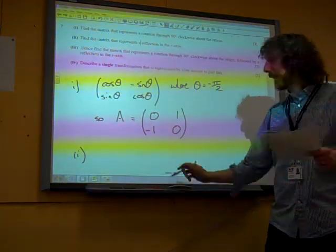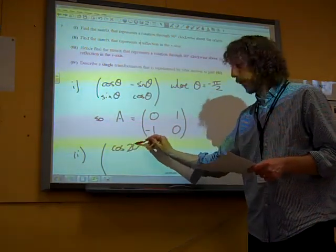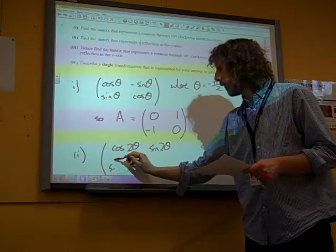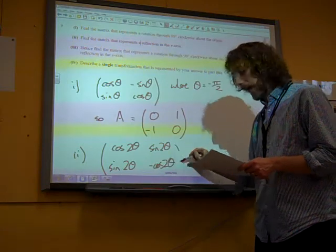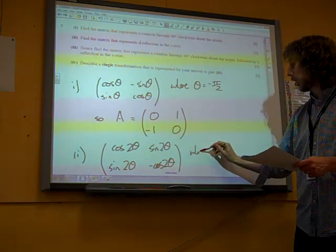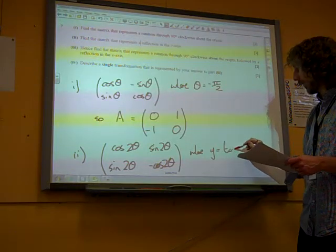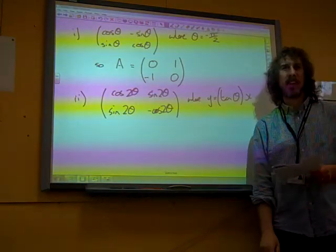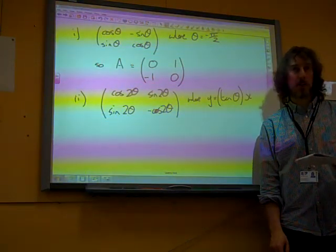So the reflection on the formula booklet says cos 2 theta, sin 2 theta, sin 2 theta, minus cos 2 theta, where we're reflecting in the line y equals tan theta x. We want the x-axis.